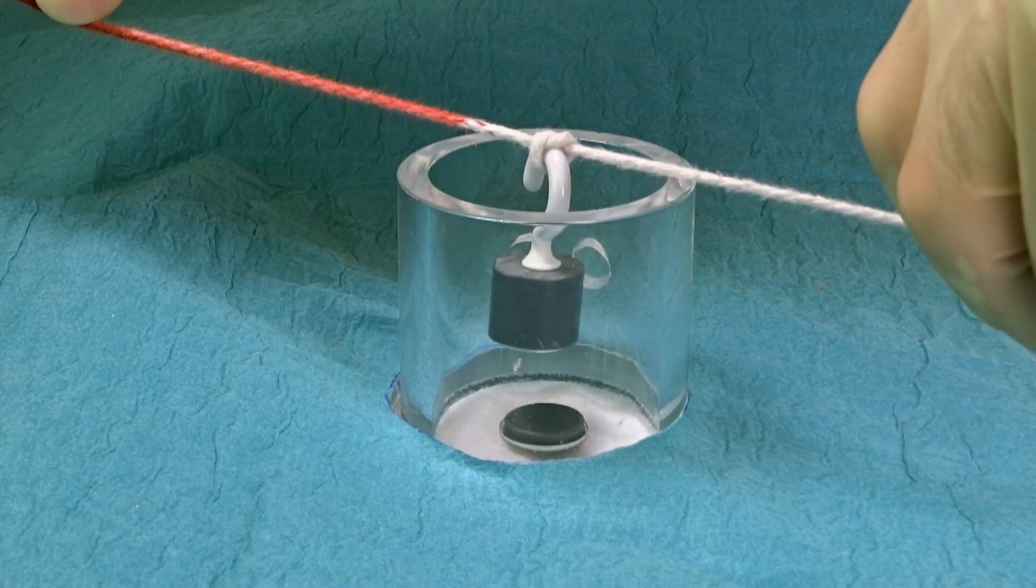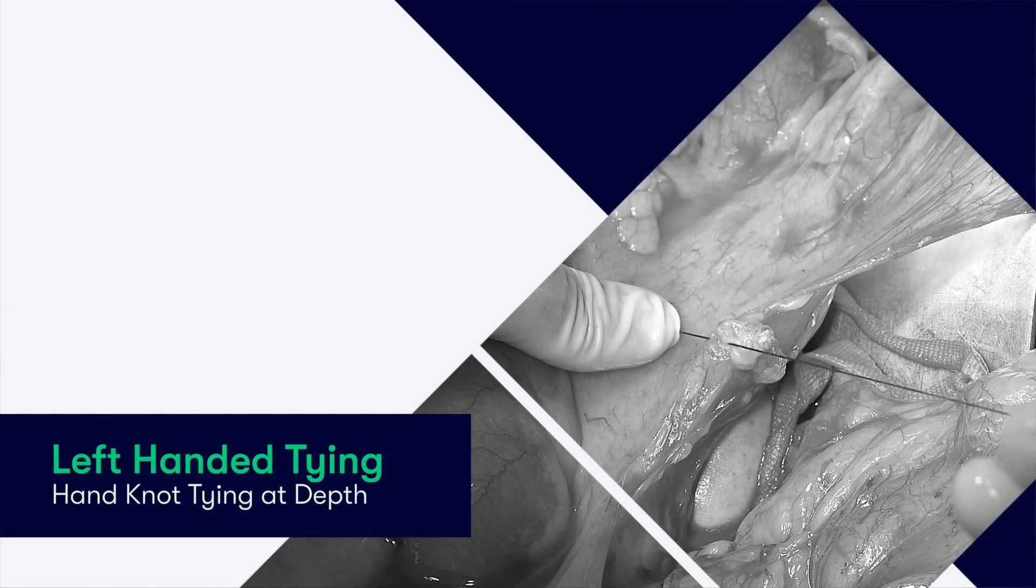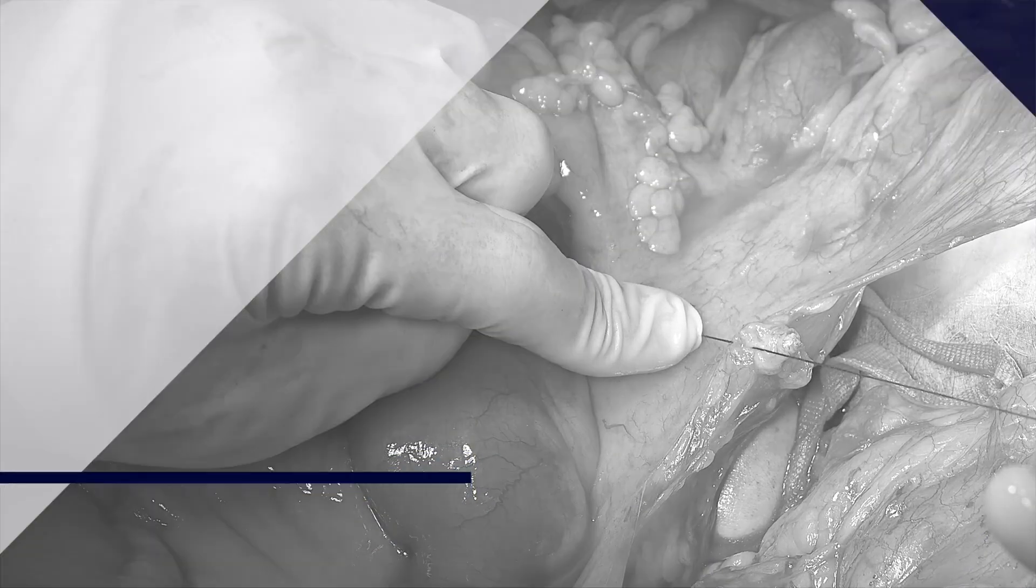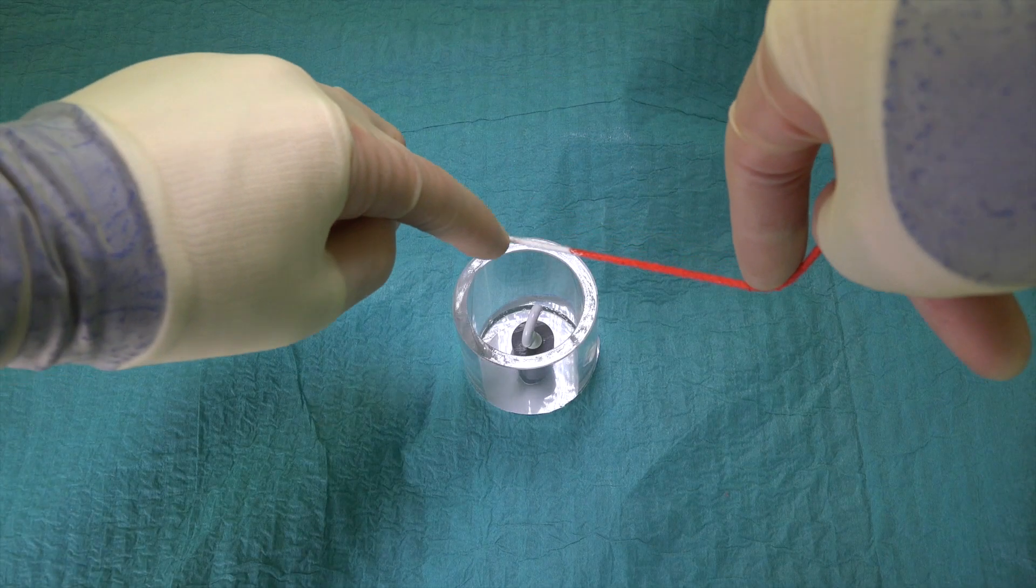So, we need to modify our technique to prevent this from happening. We shall start by demonstrating the technique with the left hand first. We start by hooking the suture around the structure that we should be tying.